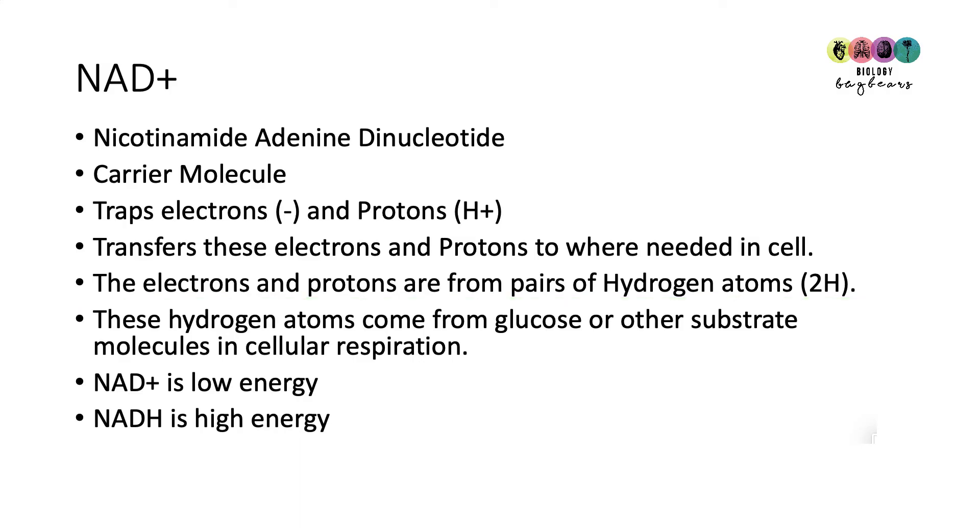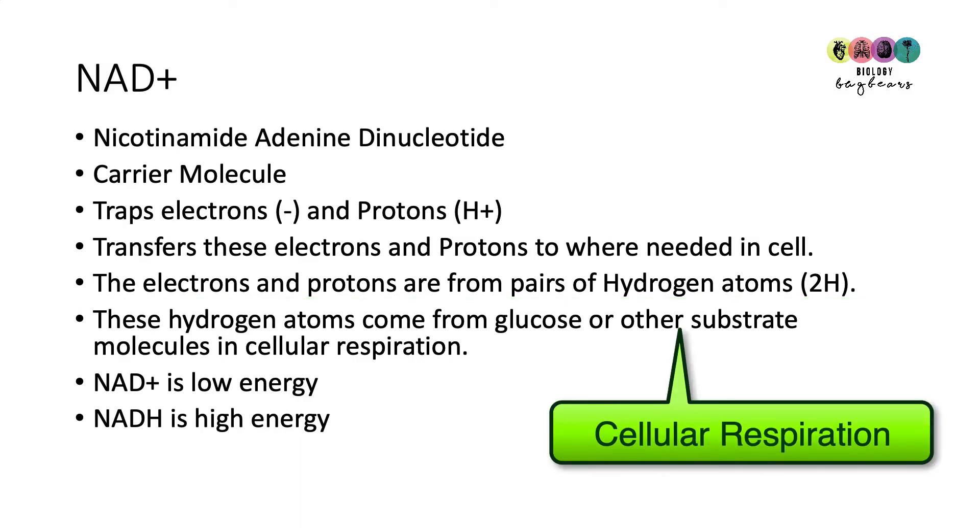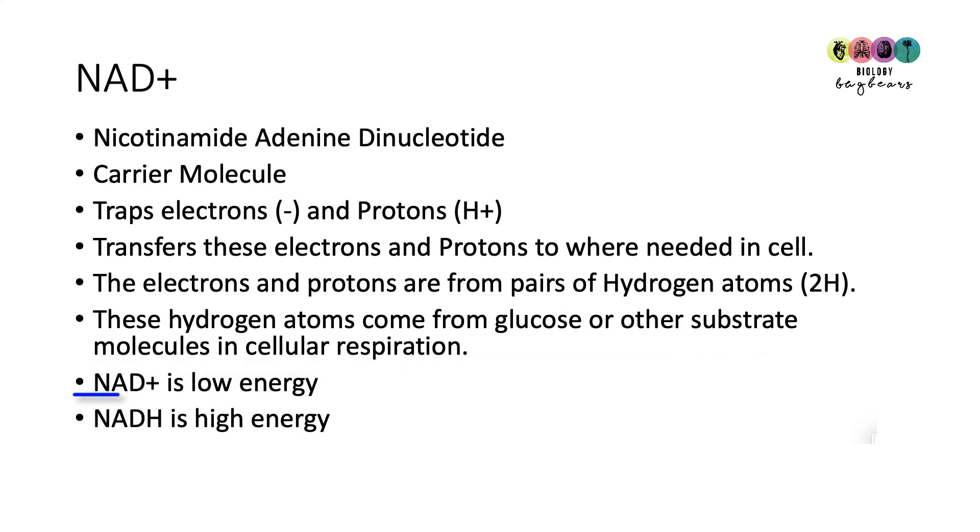And because we're getting ready to study cellular respiration, we're stating that these hydrogen atoms come from glucose or other substrate molecules in cellular respiration. We know that NAD+ is a low energy molecule, and when it traps those electrons and that proton, it turns into NADH, which is a high energy molecule.